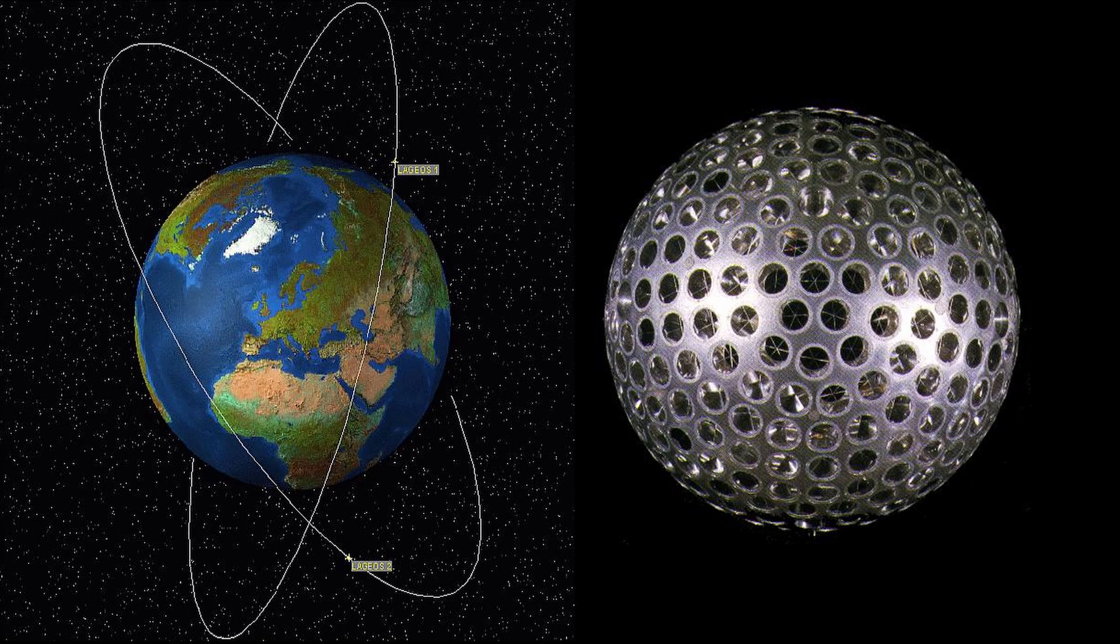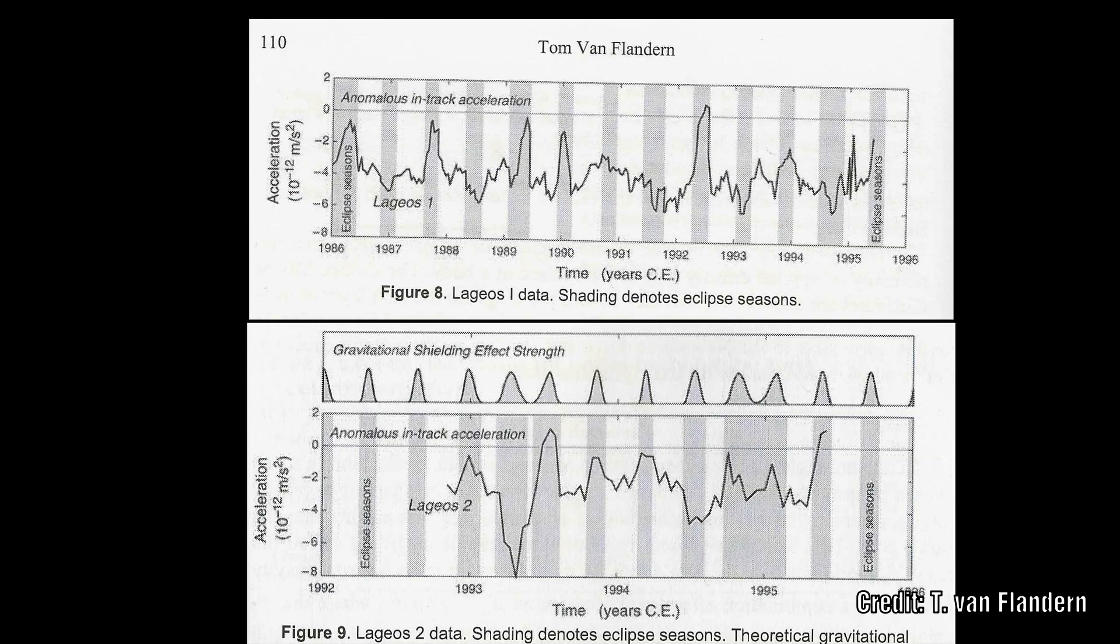Both of these satellites exhibit anomalous in-track accelerations that were unexpected. The average negative acceleration throughout the data can be explained as a combination of radiation, thermal and charged drag forces. But the data shows substantial deviations from this average drag, especially during eclipse season, and these are not easily explained.